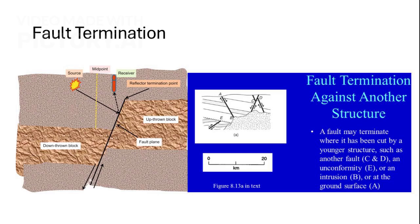Faults can terminate against various structures, such as younger faults, intrusions, or unconformities. These terminations can influence the geological landscape, affecting how faults interact and evolve. By studying these interactions, geologists can better predict fault behavior and its impact on the Earth's surface.